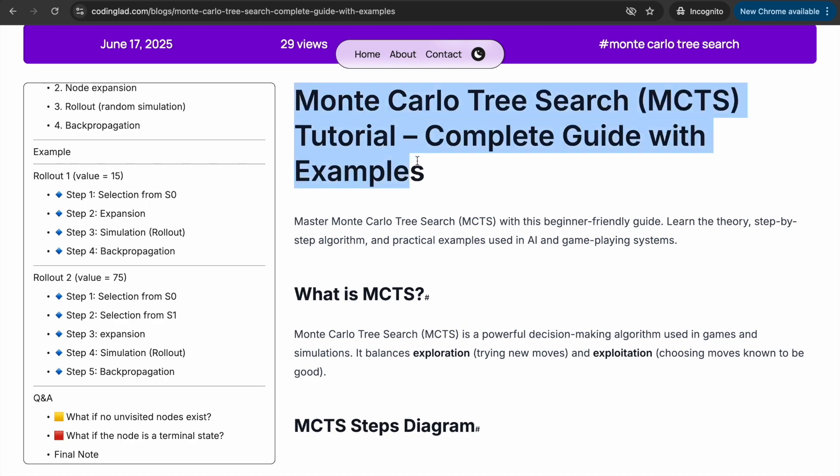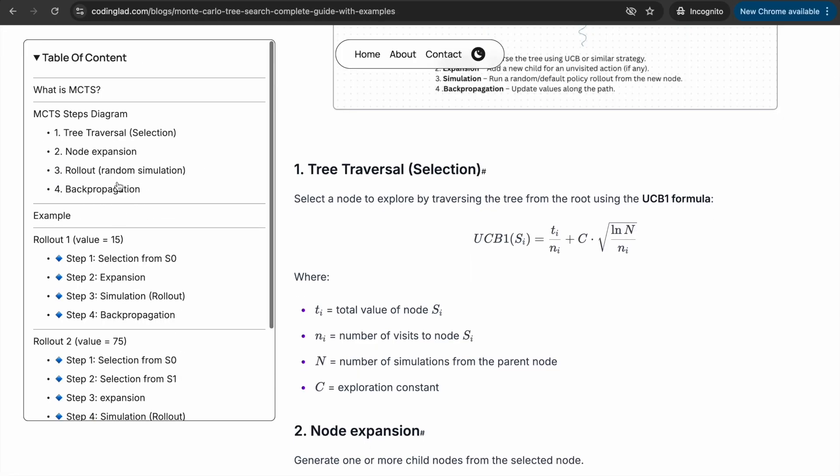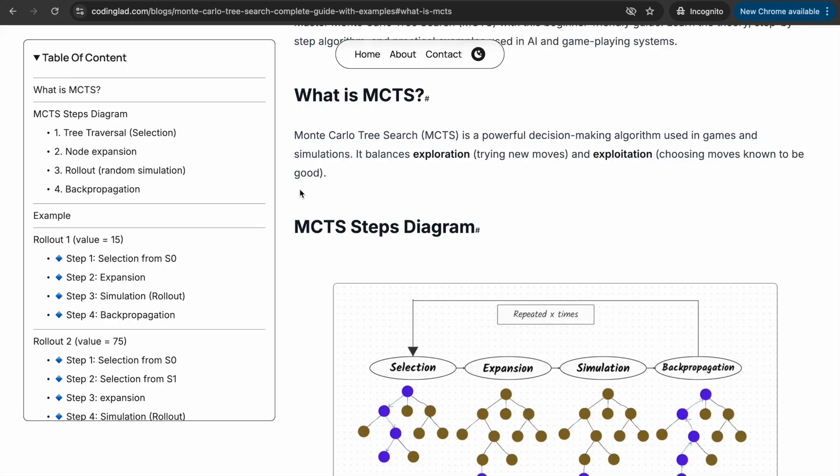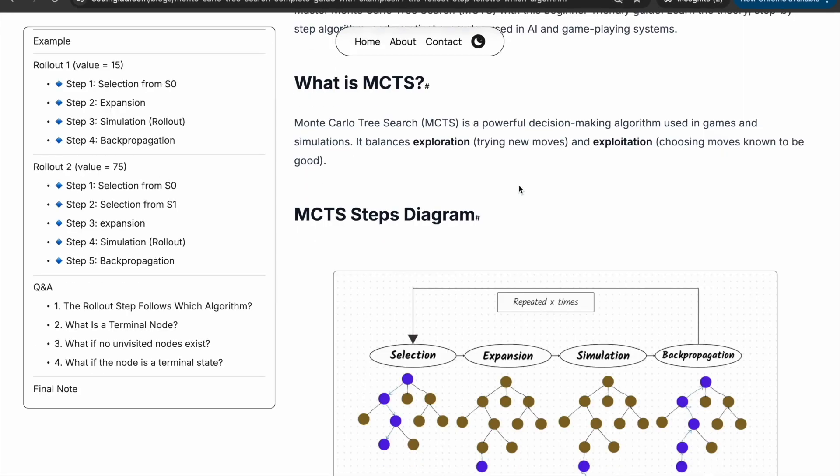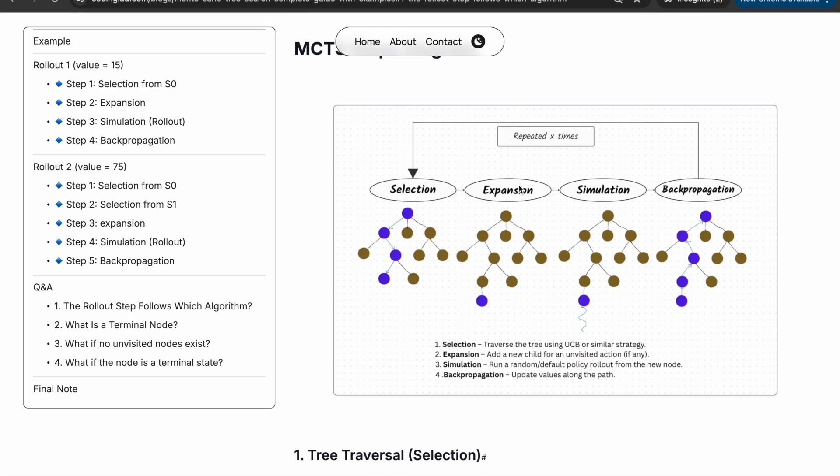So it basically tries new moves and also sticks to what seems to work best. That's the specialty of this algorithm. Don't worry, we'll understand everything clearly with examples. The MCTS algorithm follows four main steps: selection, expansion, simulation, and backpropagation. All these four steps are repeated X times, where X is the number of iterations you want the algorithm to run.